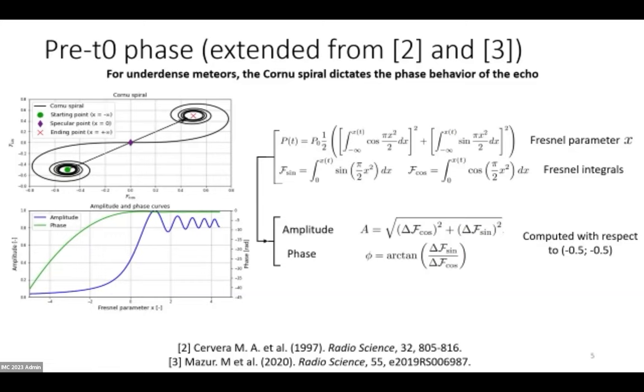If we plot those two integrals as a function one of the other, you obtain the Cornu spiral which is displayed here. What you see is that we start from this green dot here, and progressively as x increases and as the meteor enters the atmosphere, we progressively spiral outwards, pass by this purple diamond here which is the specular point, and then progressively spiral towards this red cross.